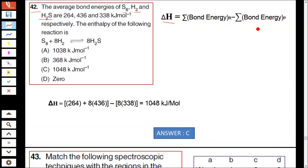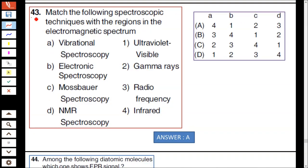Delta H was given as bond energy of reactant minus product. So bond energy of S8 reactant is 264 plus 8 into H2, which is 436 minus 8 into 338, which gives 1048 kilojoules per mole. Option C is correct.